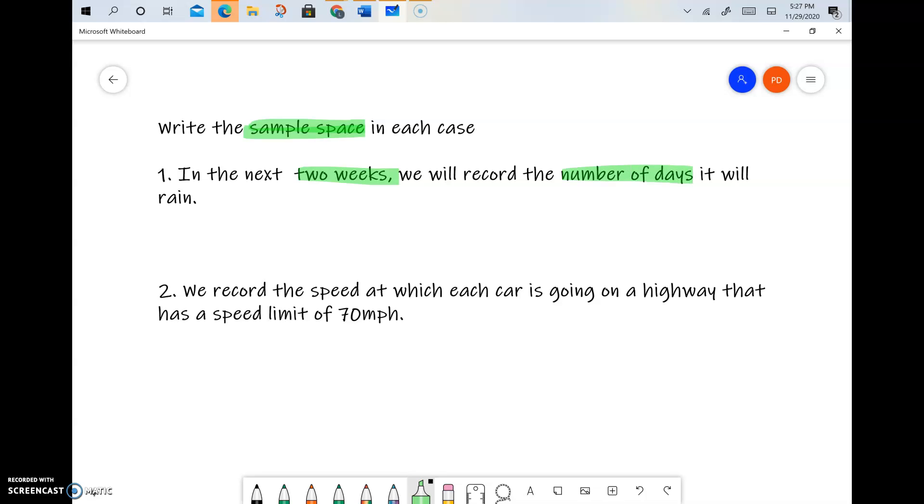When I say number of days, it's a count, so it's possible that in the next two weeks it does not rain at all, which is zero days, or it could rain one day in the next two weeks.